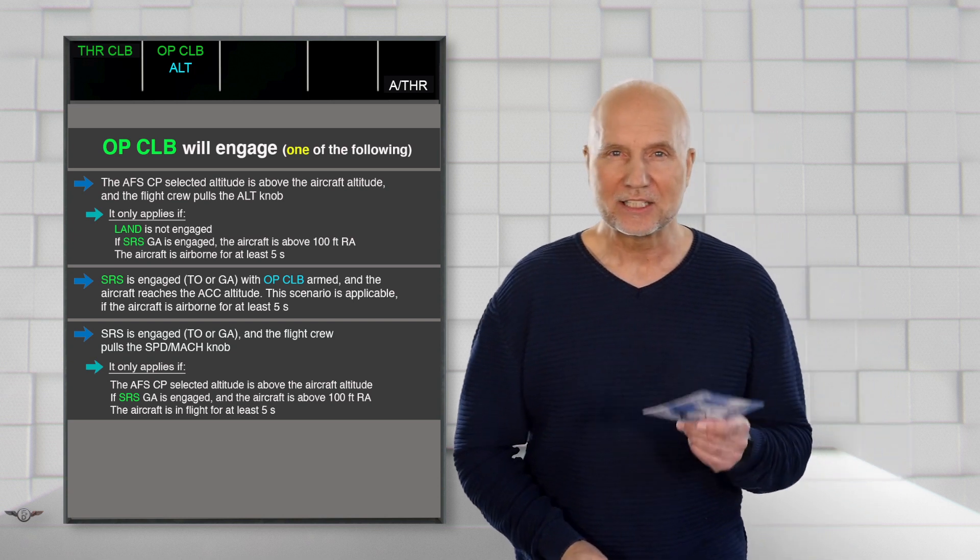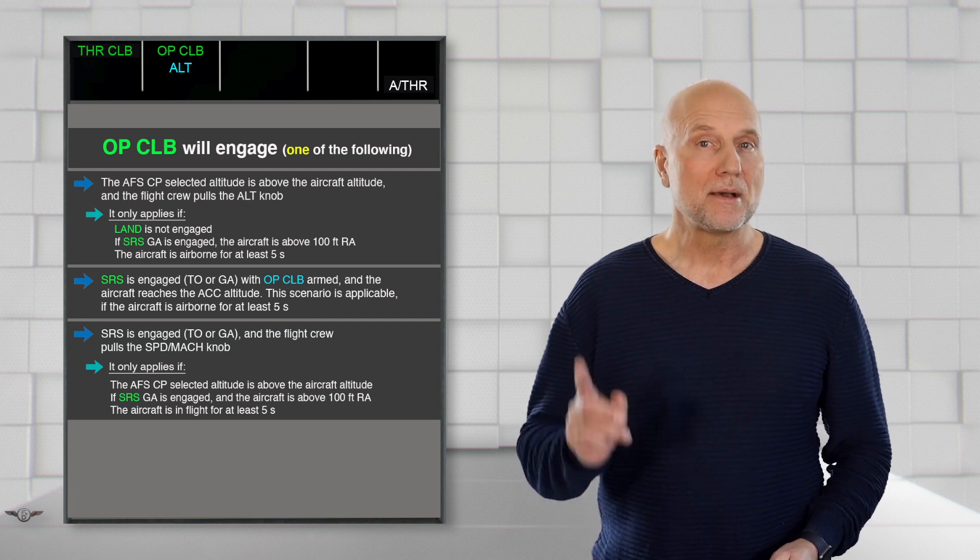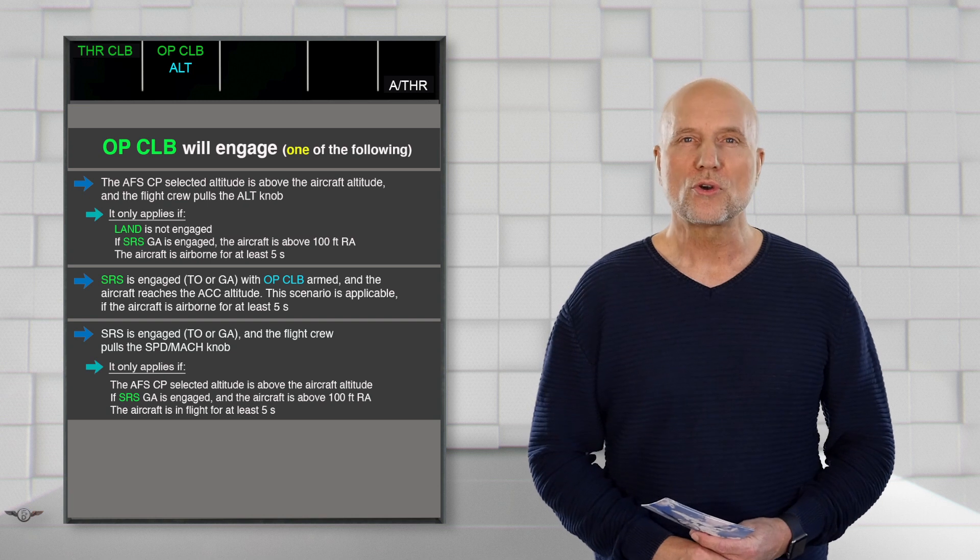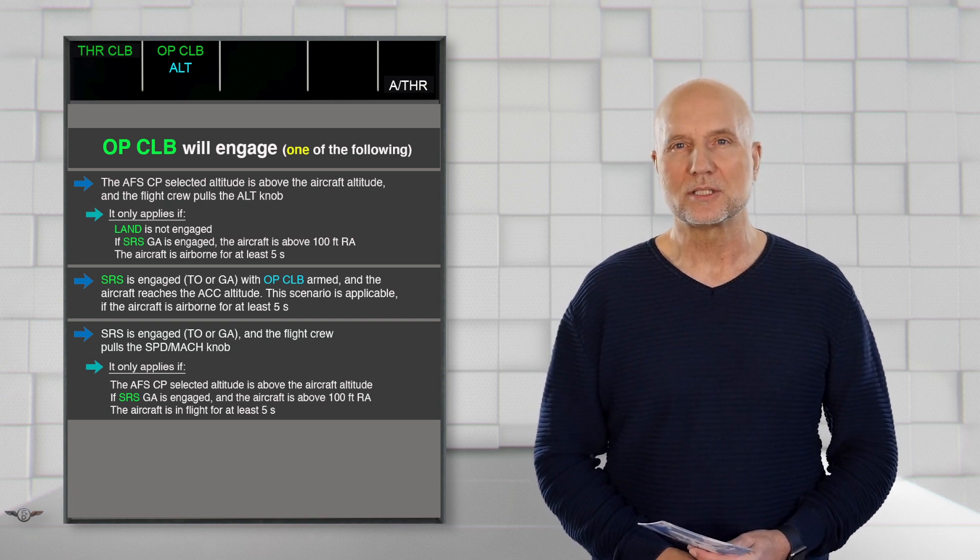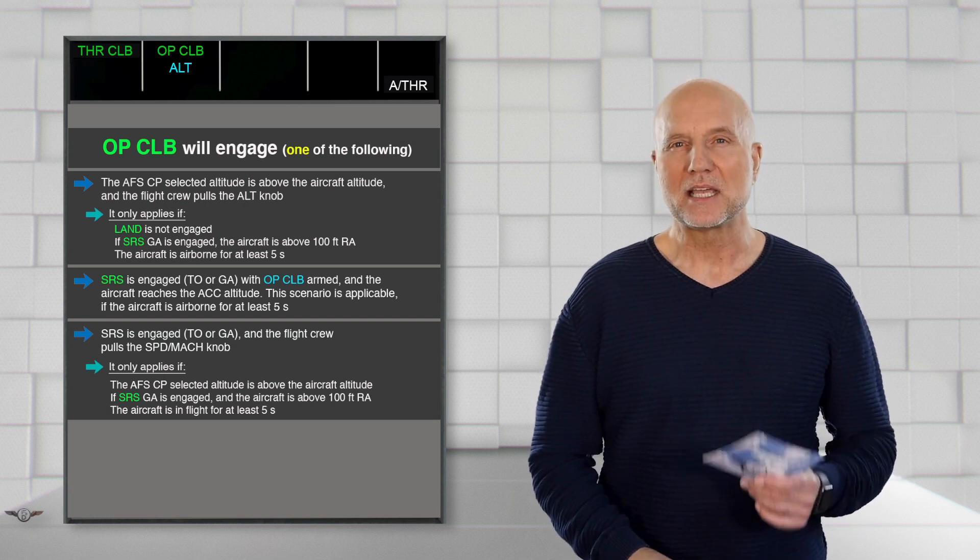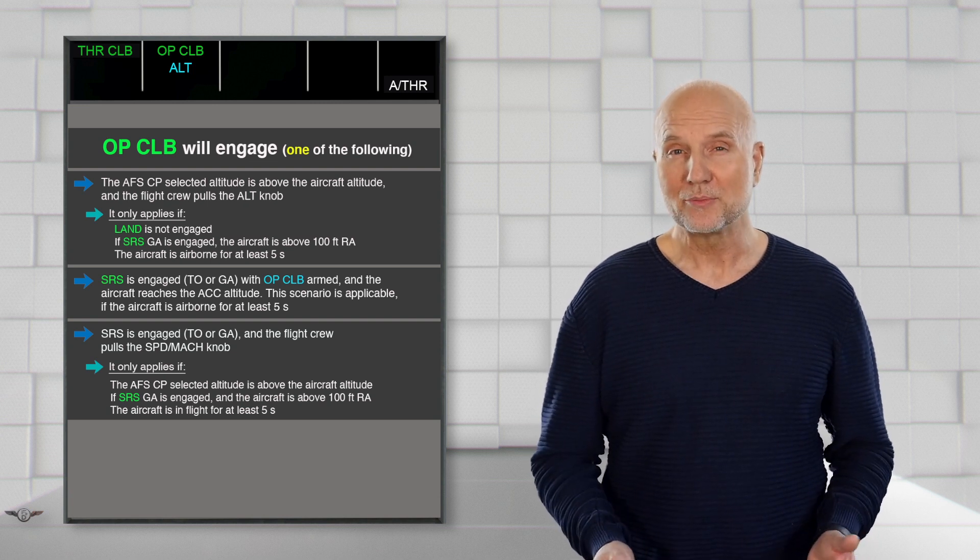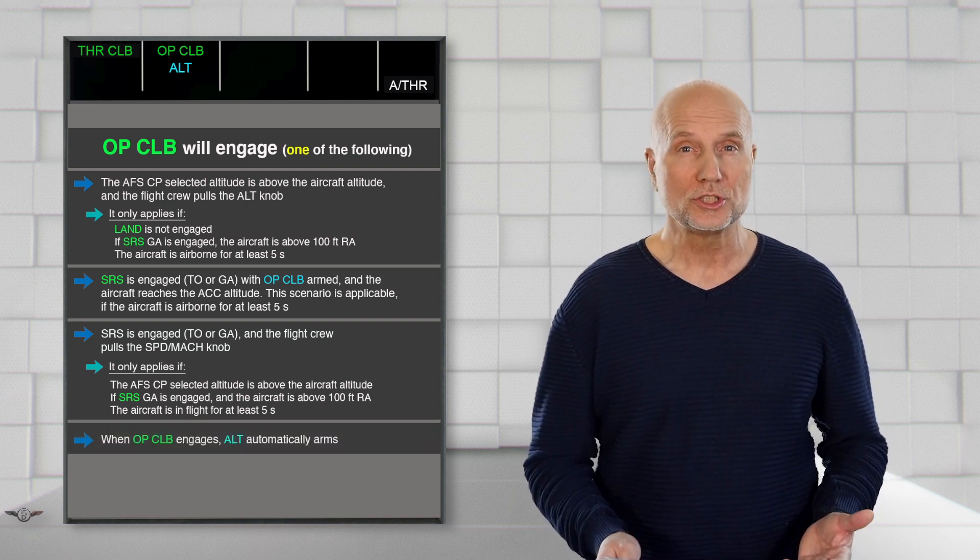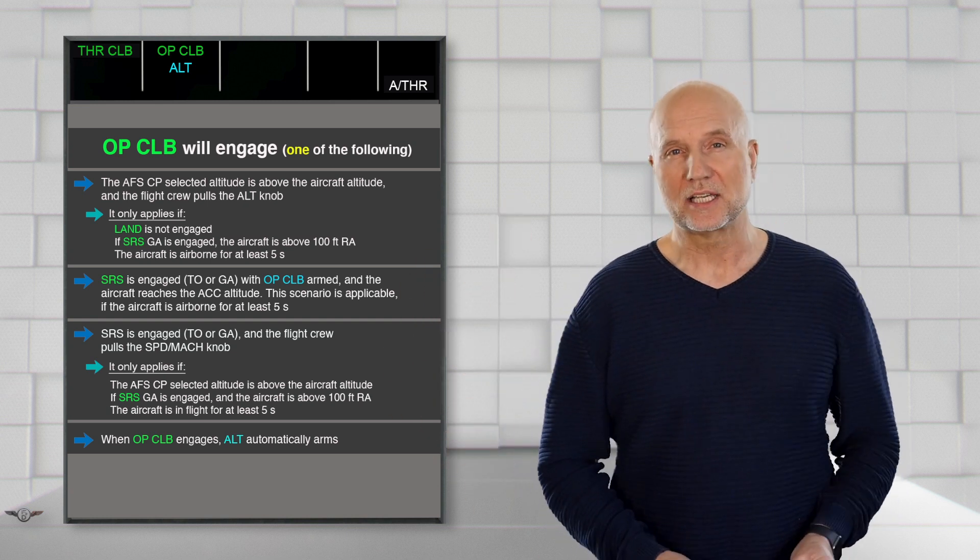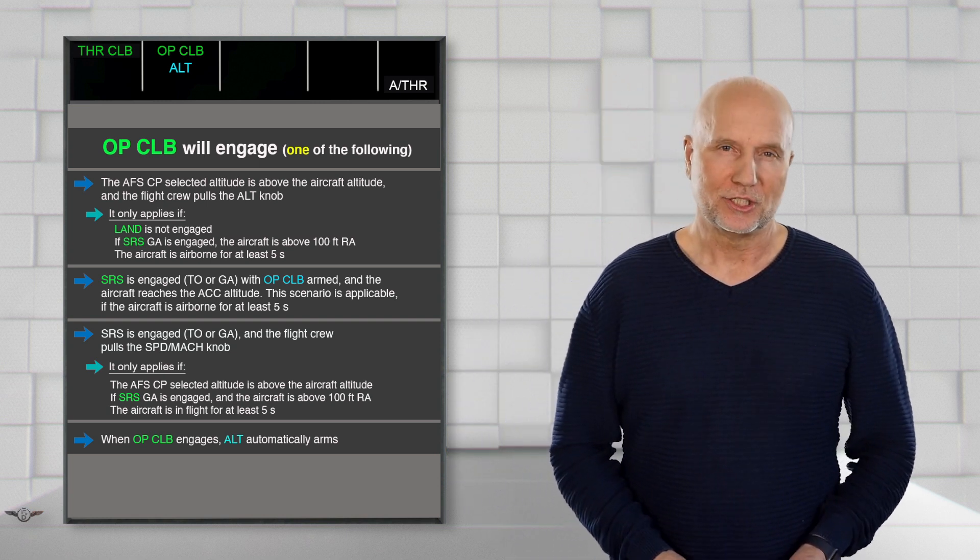And Open Climb will engage if presently in SRS and the pilot flying pulls the speed knob. However, the selected altitude in the altitude selector window on the AFS-CP must be above the aircraft altitude. In a case of SRS go-around, the aircraft must be above a radio altimeter height of 100 feet, and finally, the aircraft must be airborne for a minimum time of 5 seconds. By the way, whenever Open Climb engages, Altitude will be armed automatically, as displayed by the blue ALT in the second row. I will talk about the armed modes in the next video.